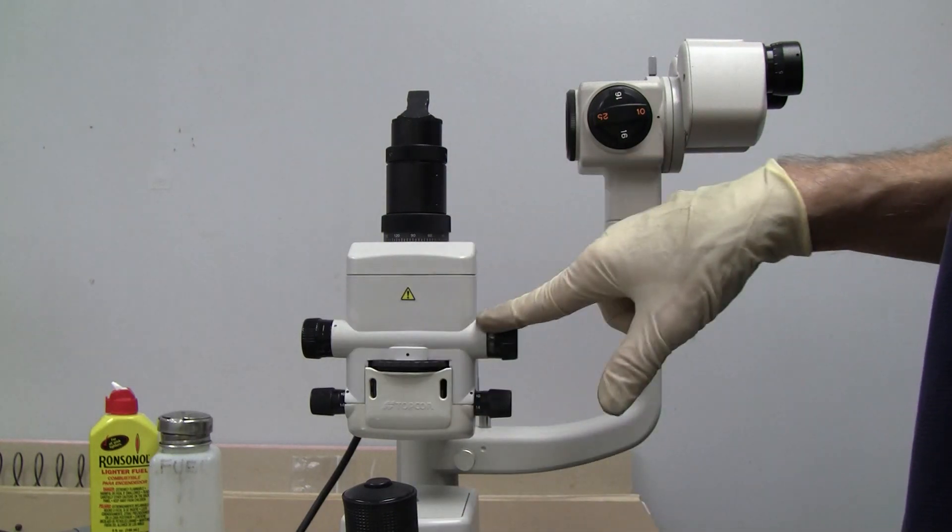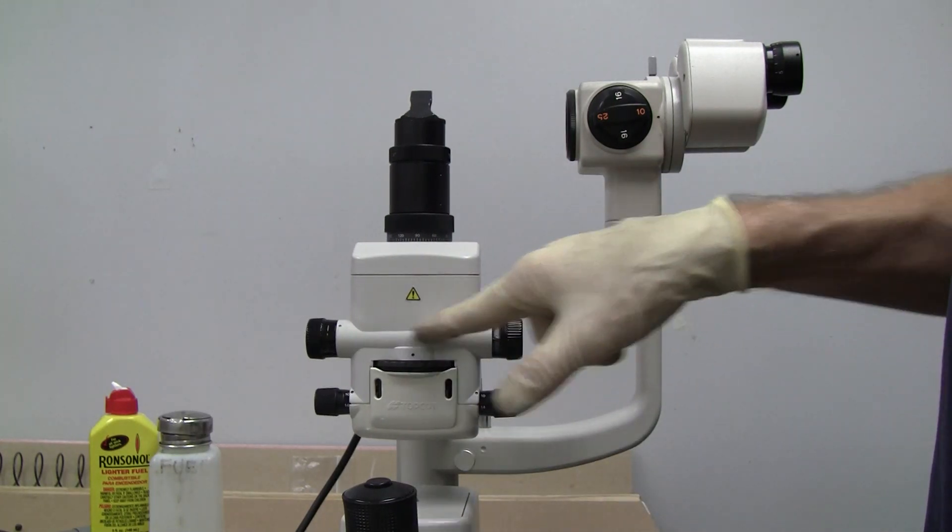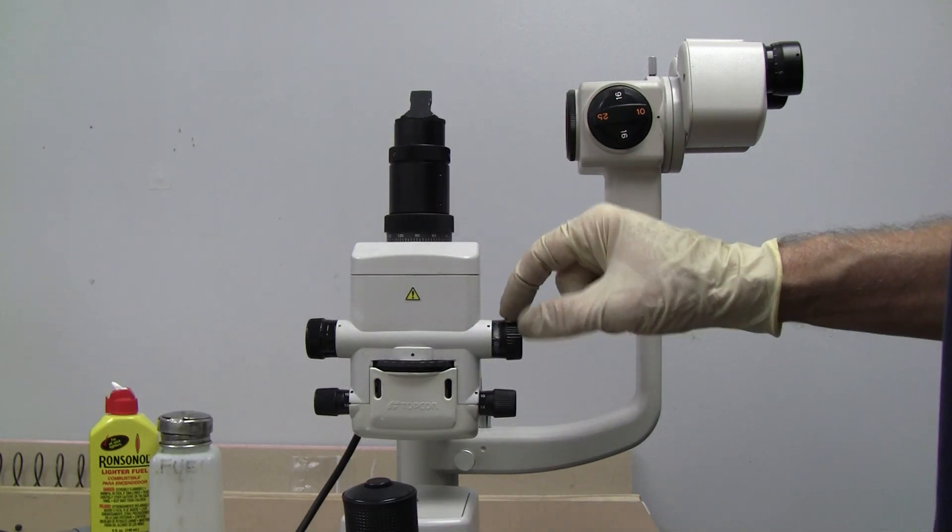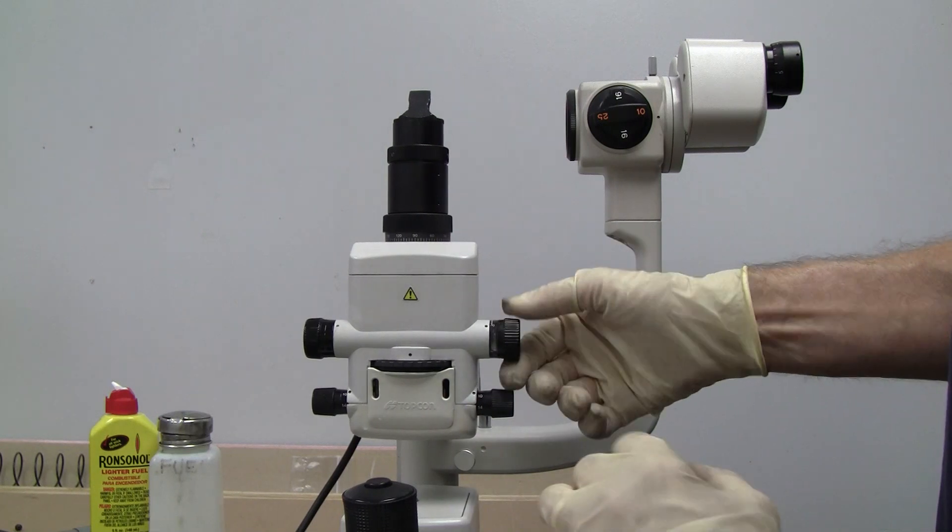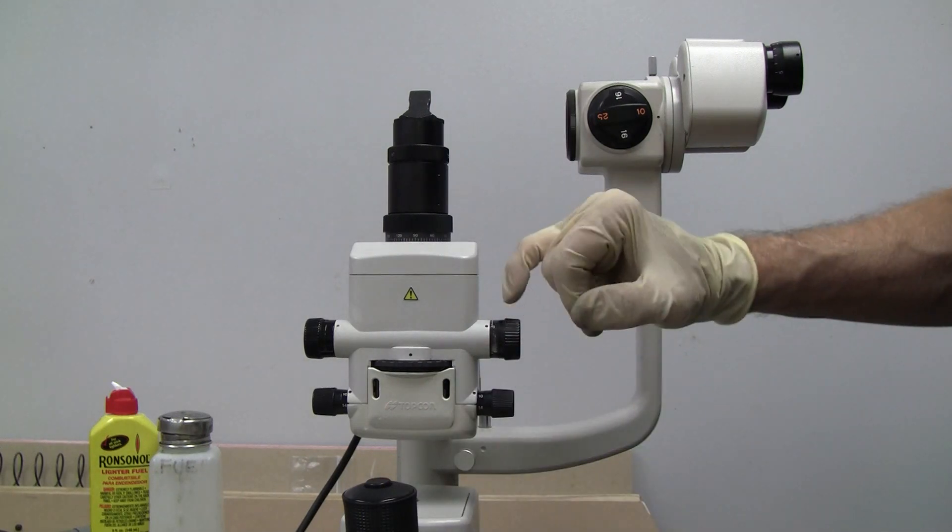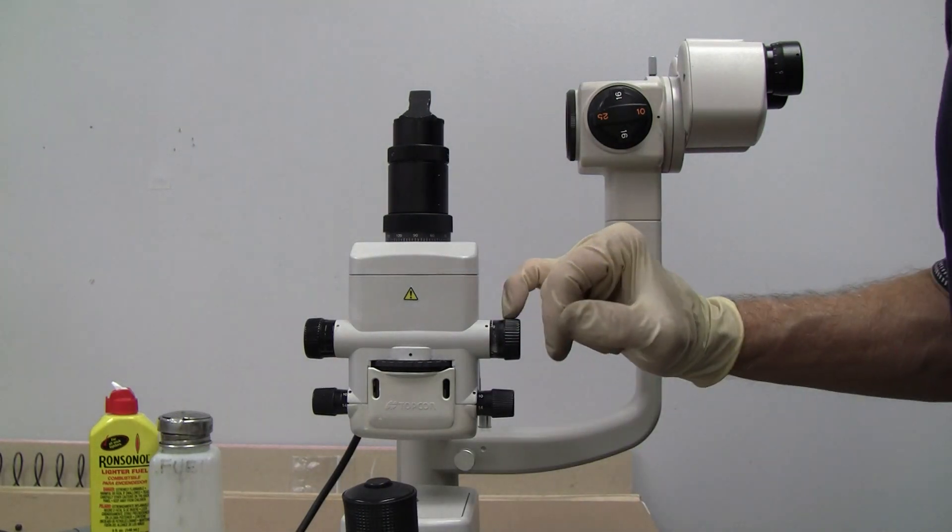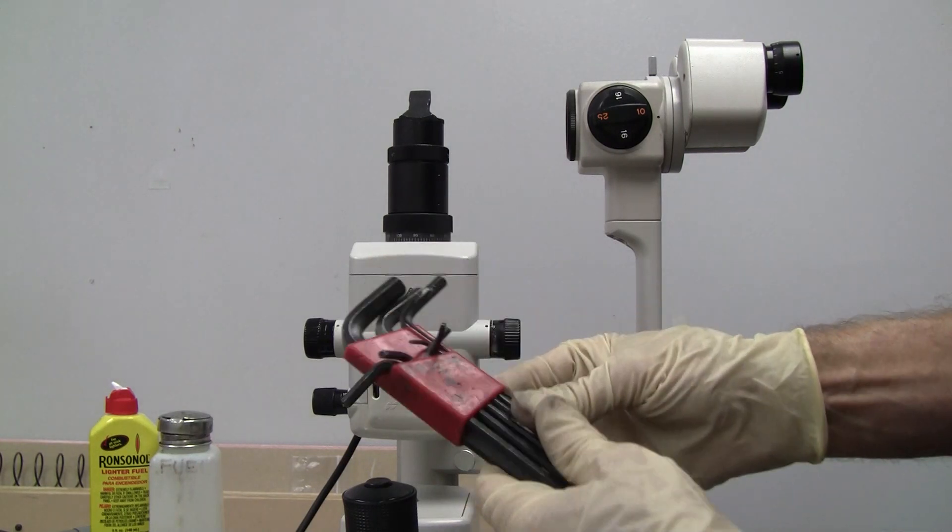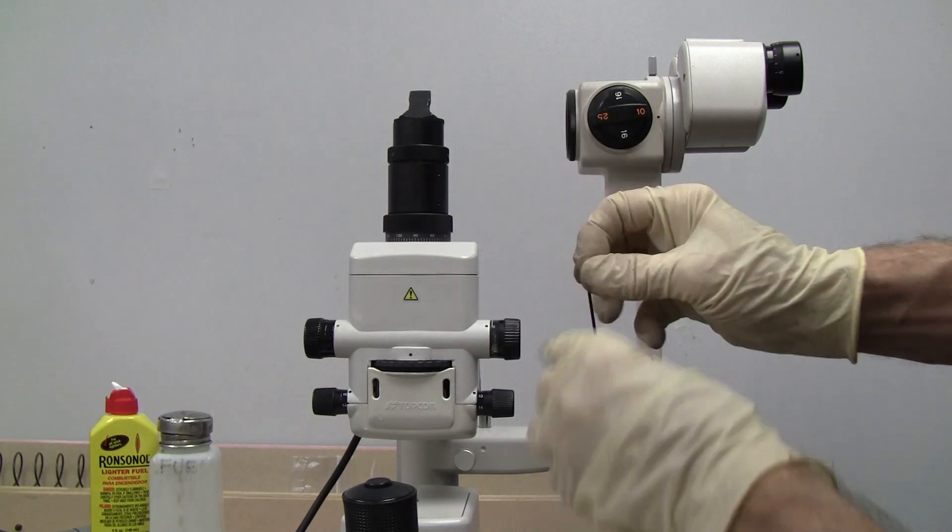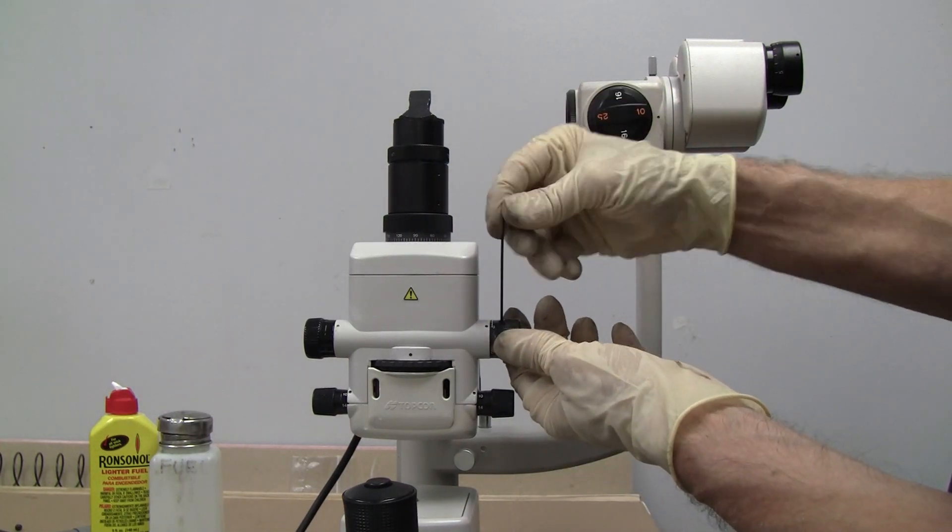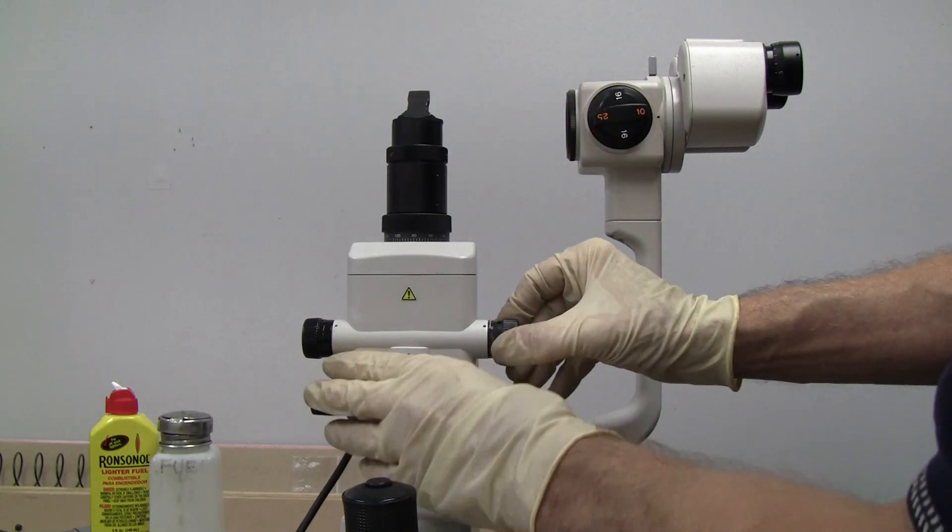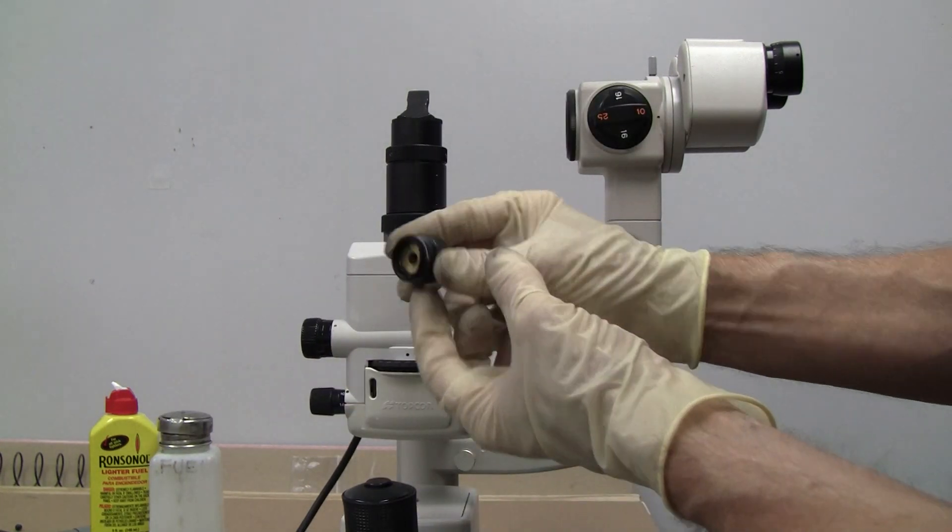And we're going to address it by cleaning this whole axle and putting new grease on it. So the way we do that is I'm going to take this knob off here with our smallest Allen. It's a 1.5. I'm taking it off.